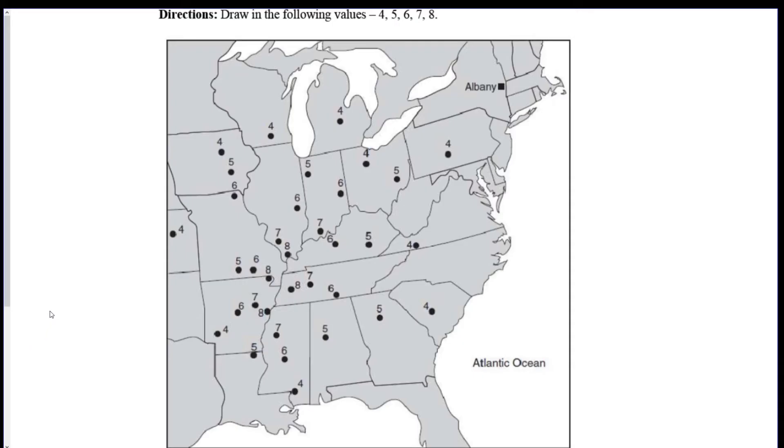So in order to start refreshing our memory before we start doing this, you might remember these little things called isolines. Now in this map we have to draw 4, 5, 6, 7, and 8. So remember, you want to connect the dots with the same numbers and an isoline represents a point of equal value. So if I were to show you the 4s, I would go like 4 to 4 to 4 and then here and then here and then here.